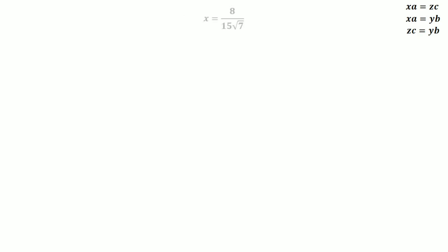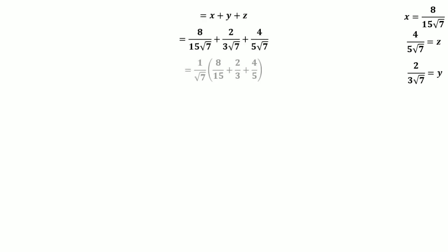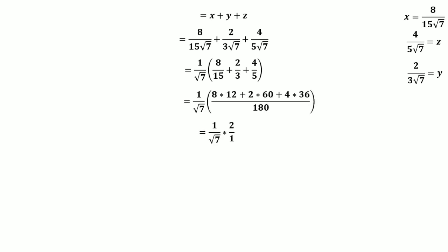With x = 8/(15√7), using x·(1/4) = z·(1/6) gives z = 4/(5√7), and using x·(1/4) = y·(1/5) gives y = 2x/3... computing precisely, y = 2/(3√7). Summing them: x + y + z = 8/(15√7) + 2/(3√7) + 4/(5√7). Taking 1/√7 as common and using LCM gives 2/√7. Therefore, x + y + z = 2/√7.